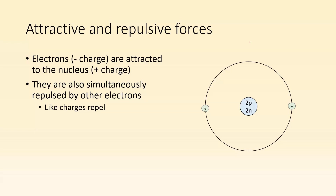Let's start with talking about attractive and repulsive forces. We know that electrons have a negative charge and they're attracted to the nucleus because the nucleus has a positive charge. These negative electrons are being attracted to the nucleus because they have opposite charges. They're also simultaneously repulsed by other electrons because like charges repel — this negative charge and that negative charge are repelling each other.